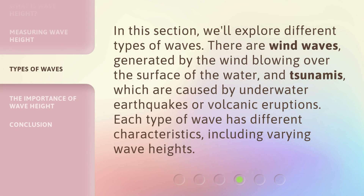In this section, we'll explore different types of waves. There are wind waves, generated by the wind blowing over the surface of the water, and tsunamis, which are caused by underwater earthquakes or volcanic eruptions. Each type of wave has different characteristics, including varying wave heights.